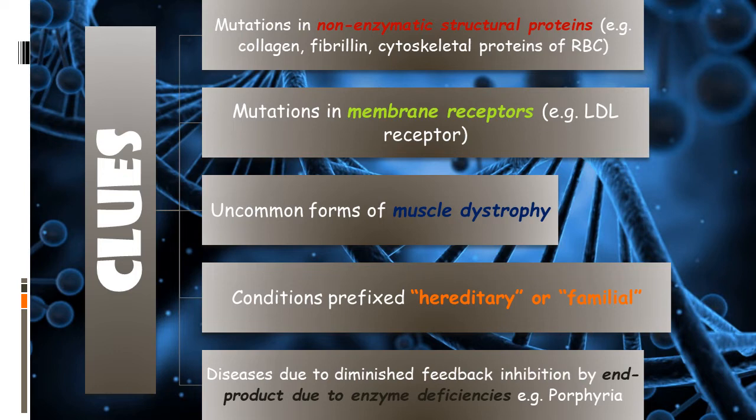Before entering into the mnemonic, we have five clues to identify autosomal dominant disorders. The first clue is mutation in non-enzymatic structural proteins. In case of proteins, there are two types: enzymatic and non-enzymatic. Among non-enzymatic proteins, structural proteins are one type, including collagen, fibrillin, and cytoskeletal proteins of RBC.